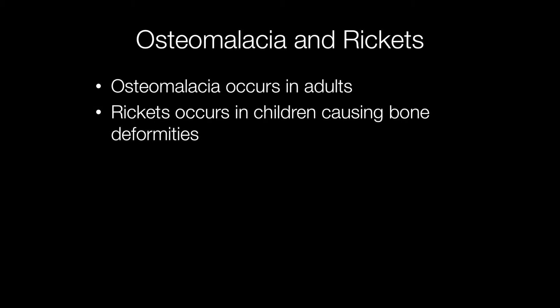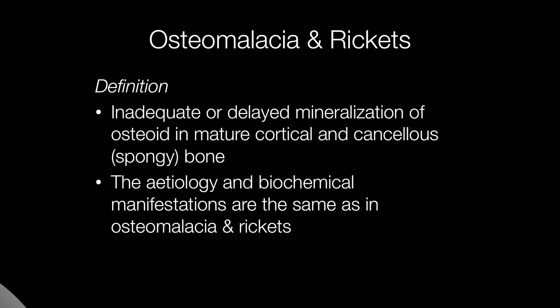Osteomalacia and rickets are very similar conditions. The only difference is that osteomalacia occurs in adults and rickets occurs in children with growing bones, causing bone deformities. Both are caused by inadequate or delayed mineralisation of osteoid in mature cortical and cancellous bone — cancellous bone being the spongy bone. The etiology and biochemical manifestations are the same in both conditions.